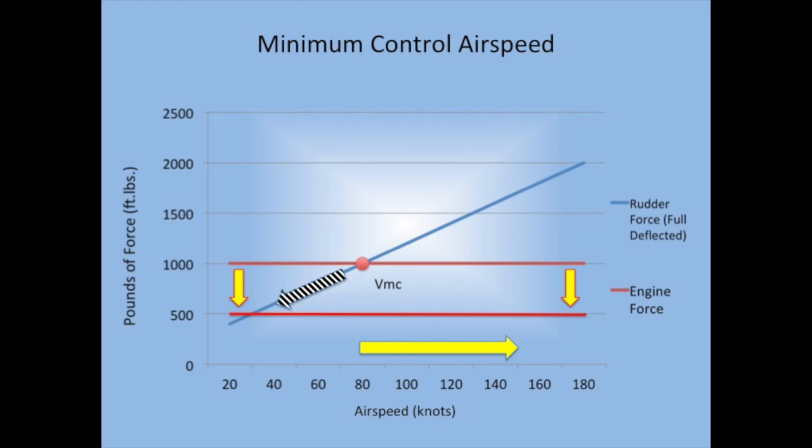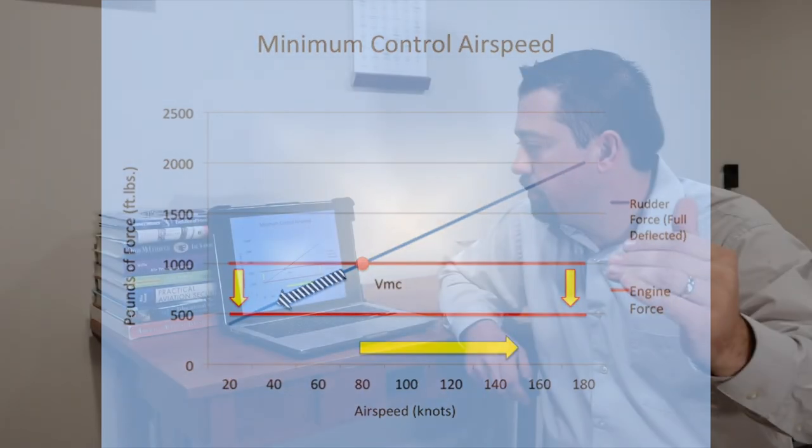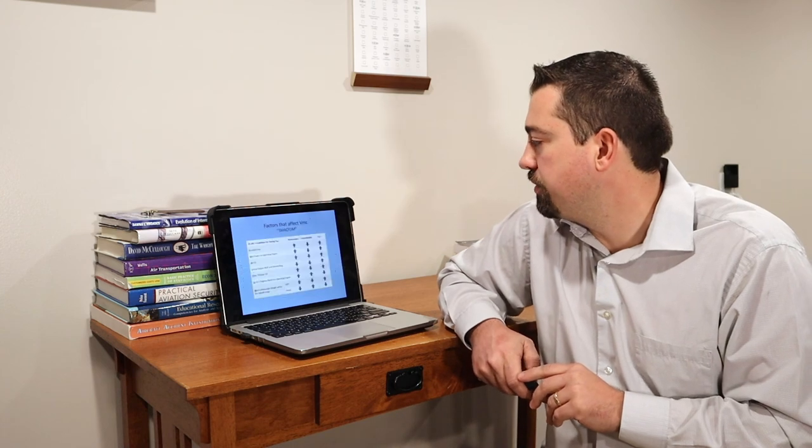The other thing you can do is reduce the power on that engine as well. Lowering the nose moves the aircraft away from VMC by increasing its speed. And reducing power, as we can see in this example, if we go from a thousand foot-pounds of force theoretically on the engine to 500, we significantly move VMC away from where the aircraft is operating. So by both reducing power and lowering the nose, you can recover from the loss of control if you're quick enough as you're approaching VMC.